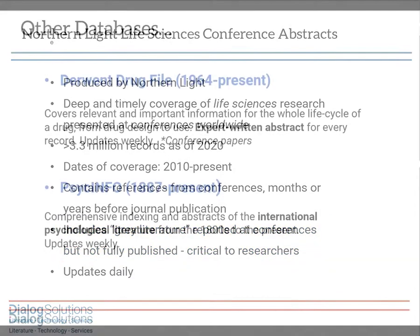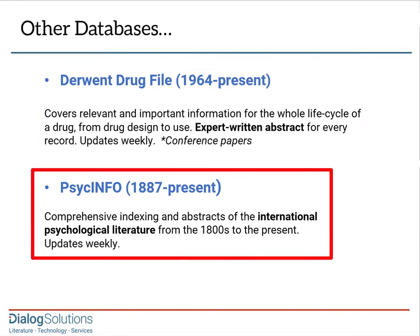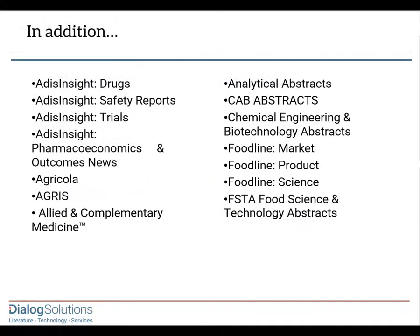In addition, there are several other databases I'd like to highlight. Derwent Drug File contains abstracts written by experts at Derwent in a way that captures the cogent information from the full text of articles and makes it more accessible by simple searching. Psych Info covers the international psychological literature — a very deep archive — and if you're researching a topic that has to do with human behavior, you'll find a great deal of overlap between these topics and the hard science aspects of biomedicine. There are many other databases in Dialog that may be important to you, and I'll show you in just a couple of minutes how to easily get more information about any of them.